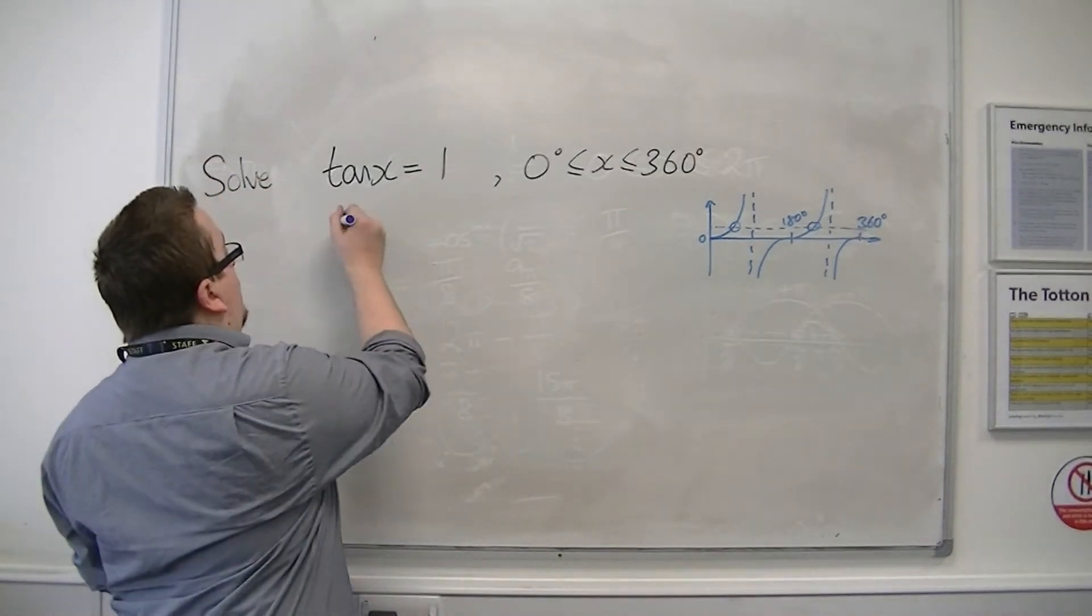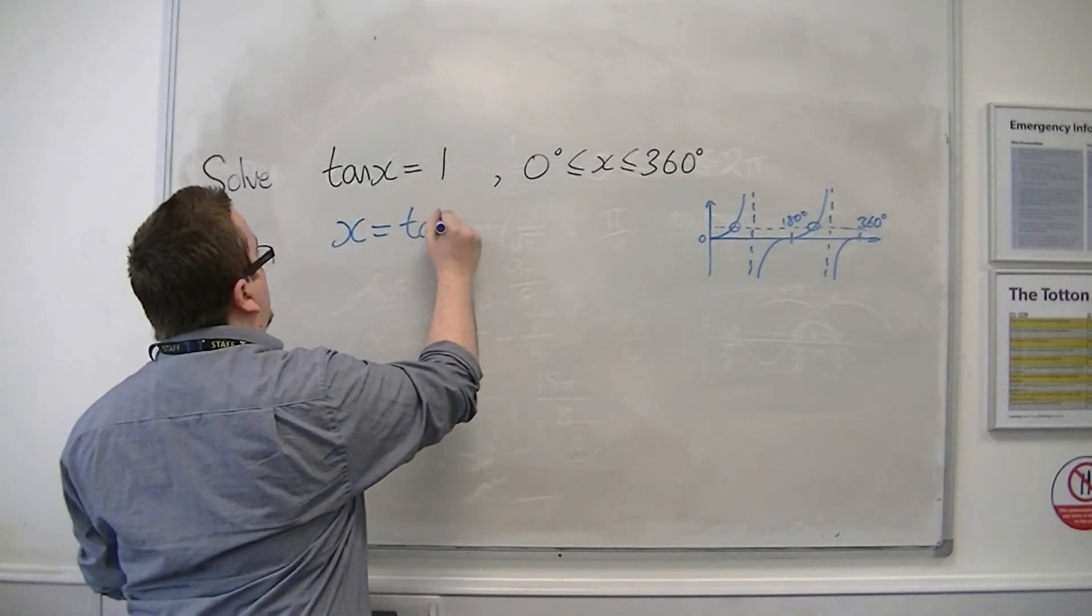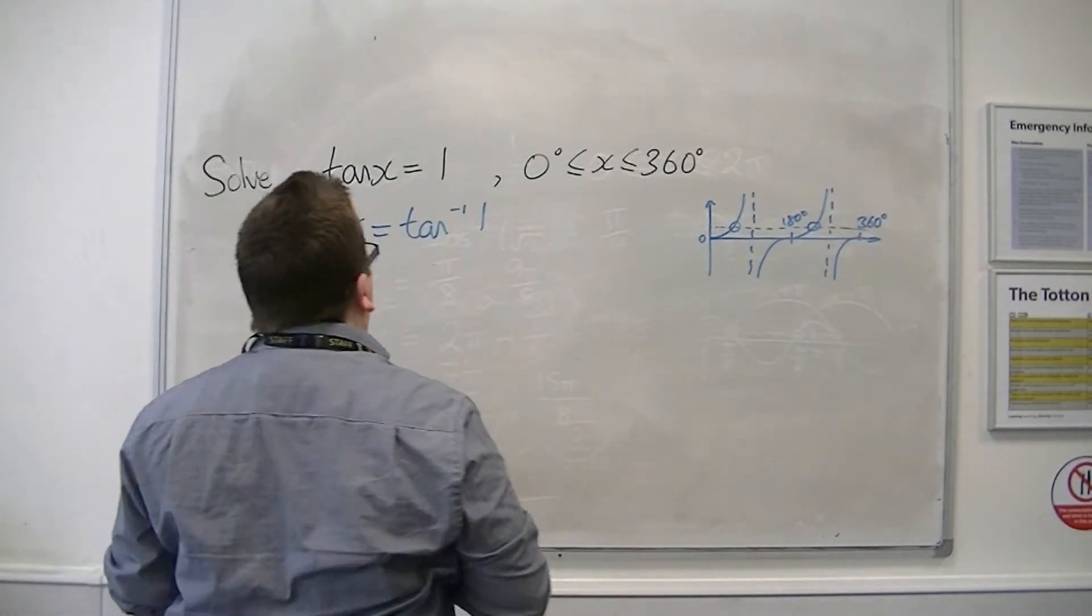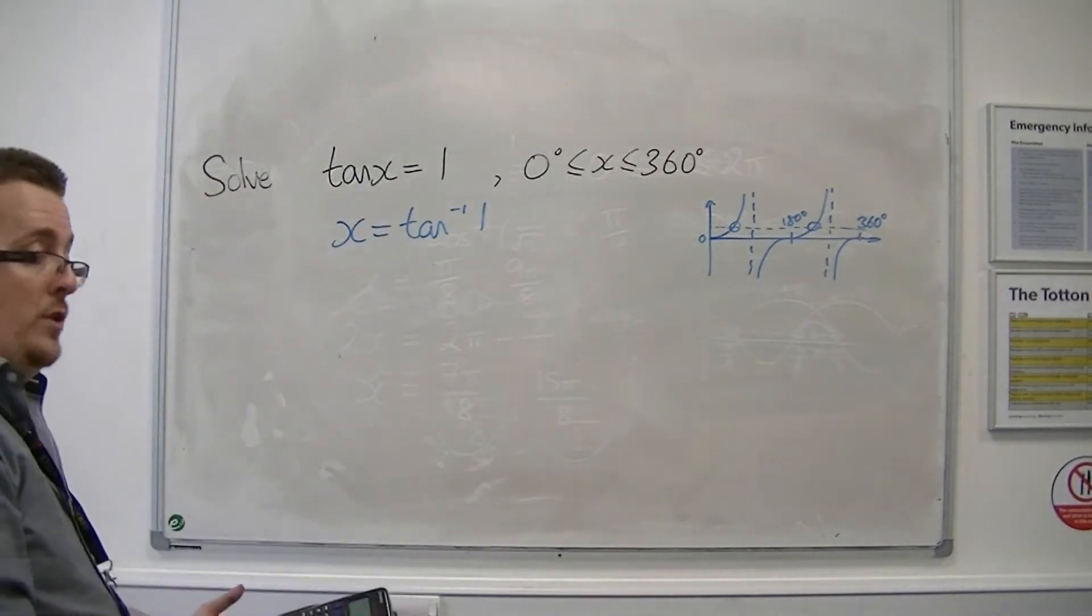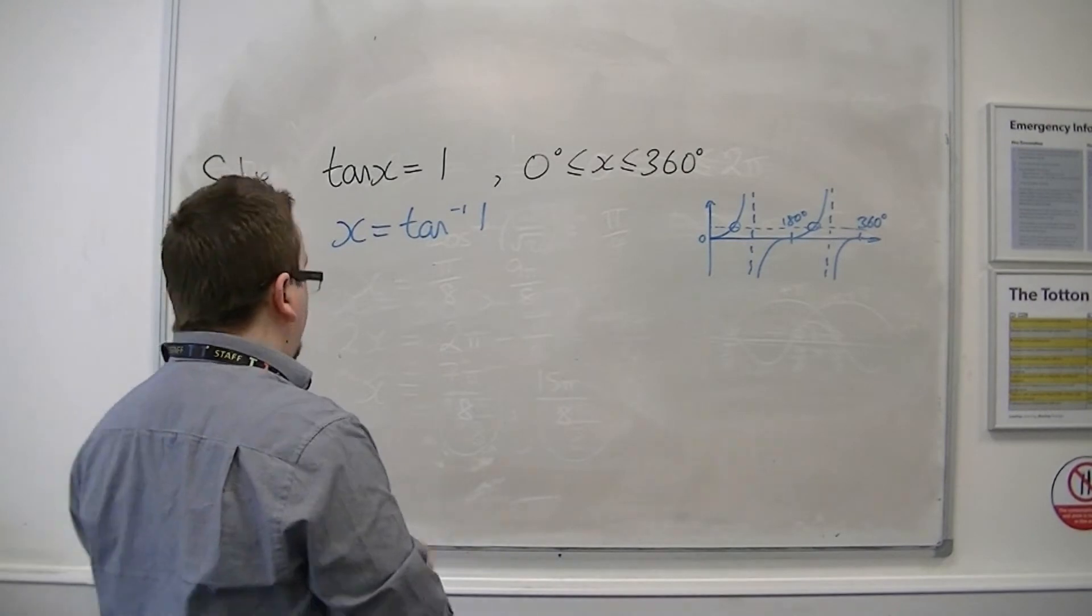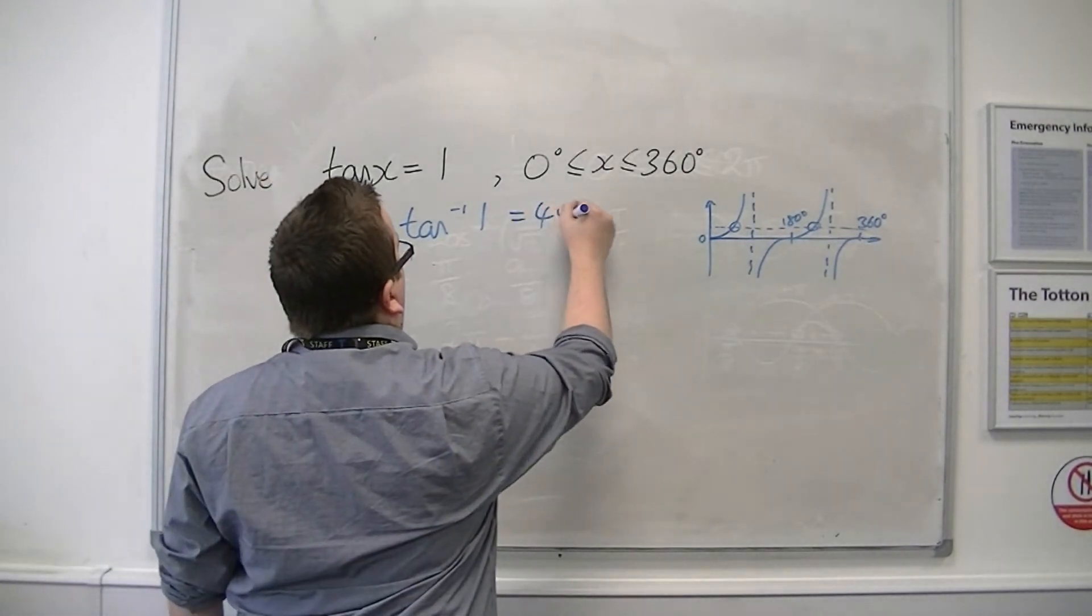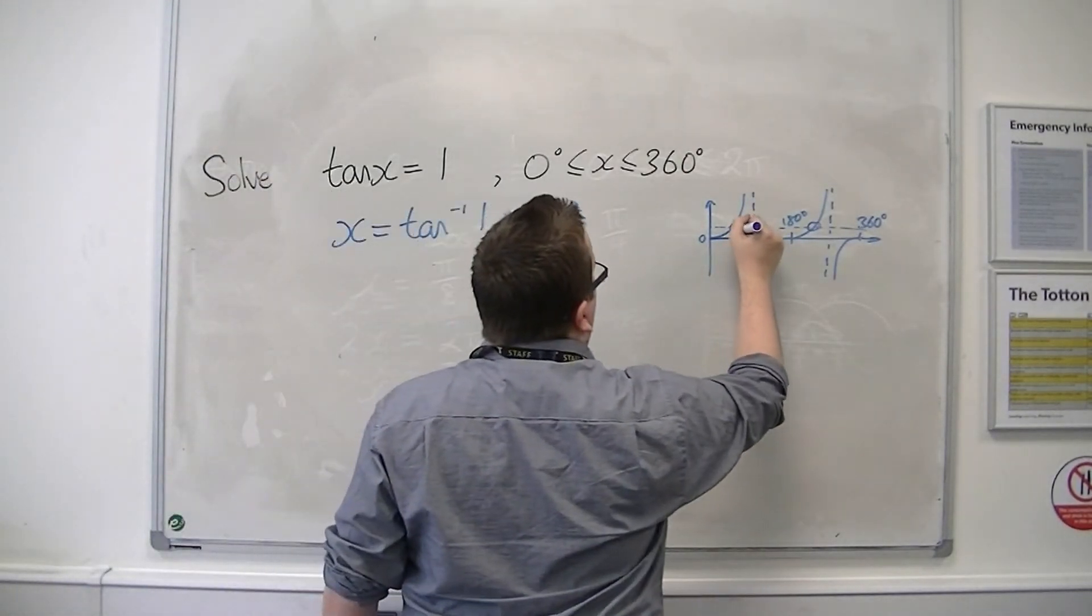So I can inverse tan both sides. So inverse tan of 1, and you get 45 degrees. So the first solution here is 45.